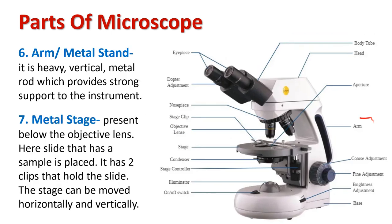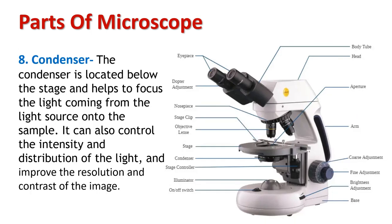The arm is a heavy metallic vertical rod which provides strong support to the whole instrument. The metal stage is located below the objective lens — this is the place where the slide having the sample is placed. The stage has two clips that hold the glass slide and keep it from moving. The stage can be moved horizontally and vertically using the stage controller.